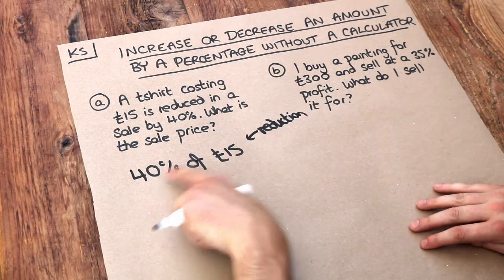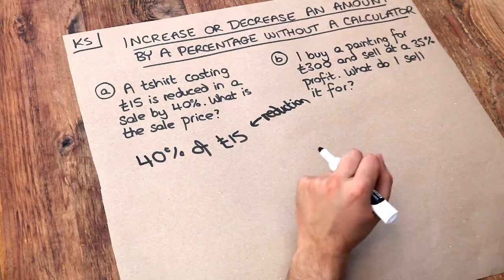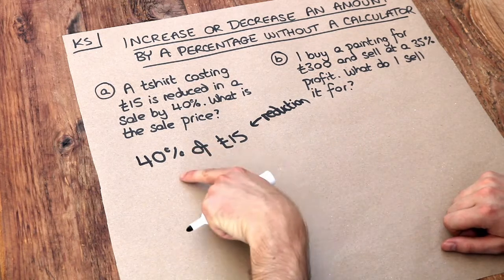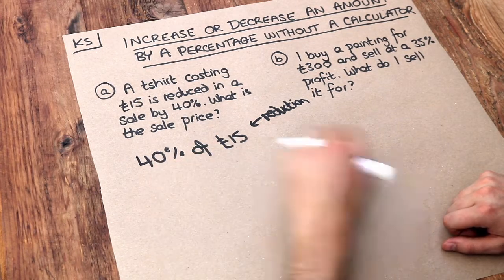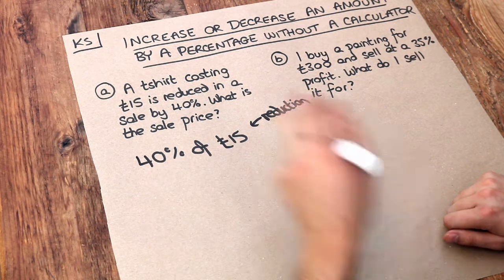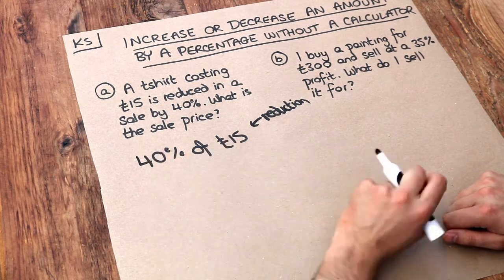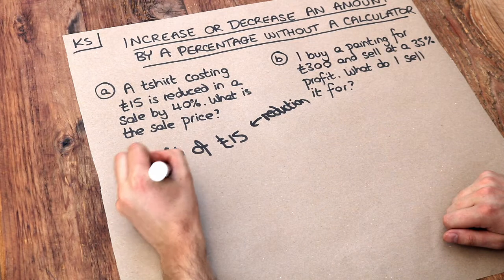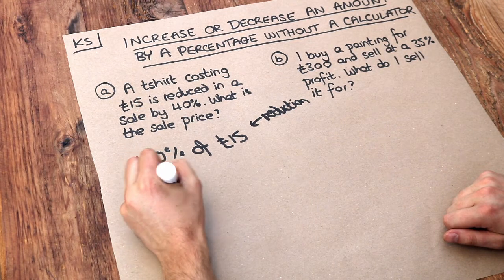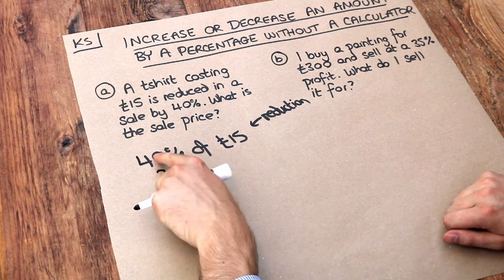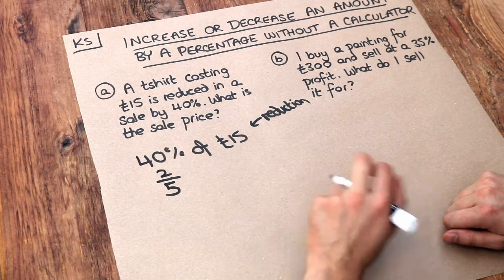Now we saw in a previous video how to find a percentage of an amount. There were two methods I showed you. You could either find what 10% was and then scale appropriately, or you can convert this into a fraction. So I'm going to convert this into a fraction. 40% as a fraction is equal to 2/5, and I recommend that you watch my video on converting percentages to fractions if that's not familiar to you.